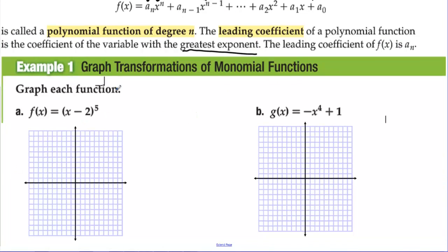Let's graph transformations of monomial functions. We start with f(x) = (x − 2)⁵. The base function is x⁵: 0⁵ = 0, 1⁵ = 1, but 2⁵ = 32, so it increases very quickly, and −1⁵ = −1, −2⁵ = −32. The minus 2 inside pushes the graph 2 units to the right, shifting all key points over while keeping the same steepness.